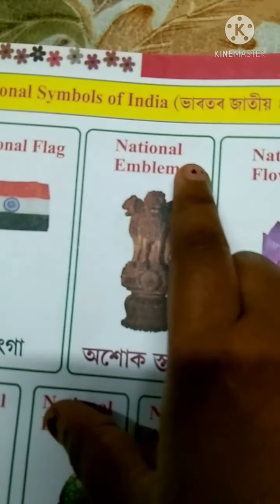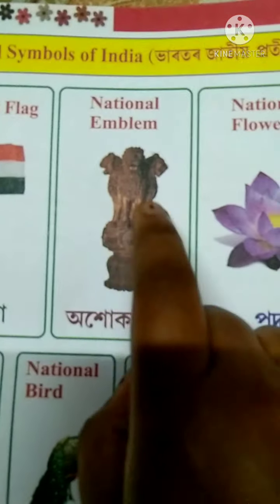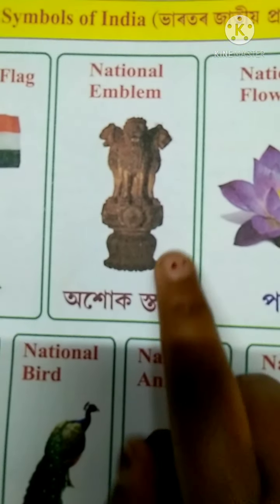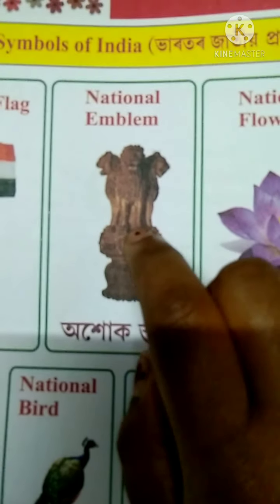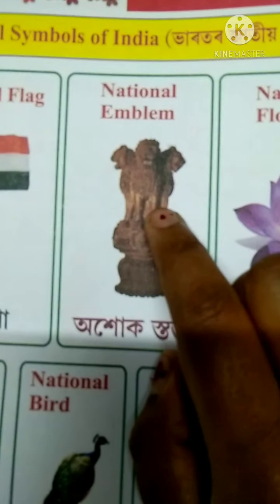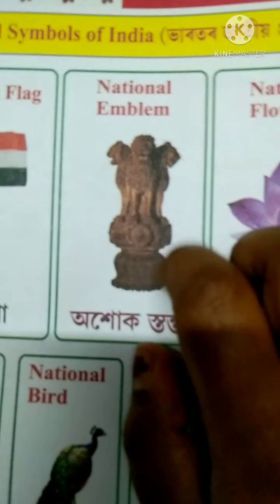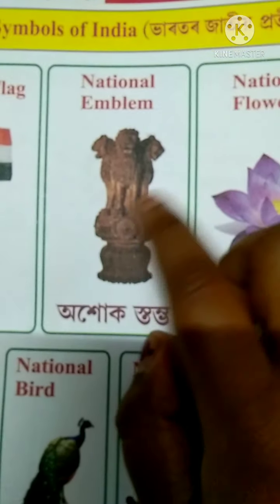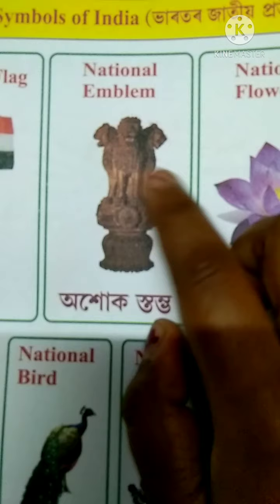What is the national emblem? This is called the national emblem, meaning Ashok Stambha. You will see this symbol on important documents and official things. This is called the Ashok Stambha — the national emblem of India.